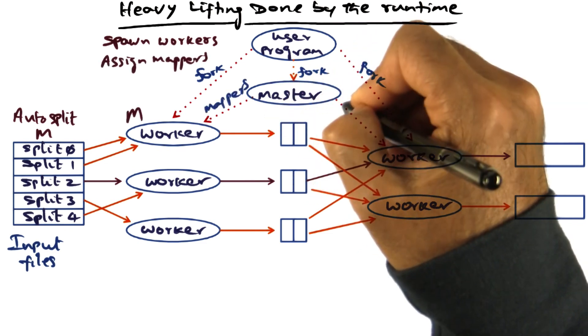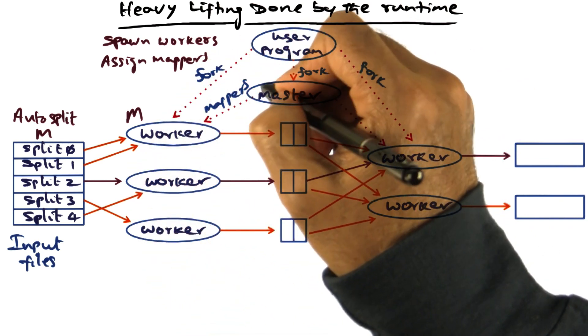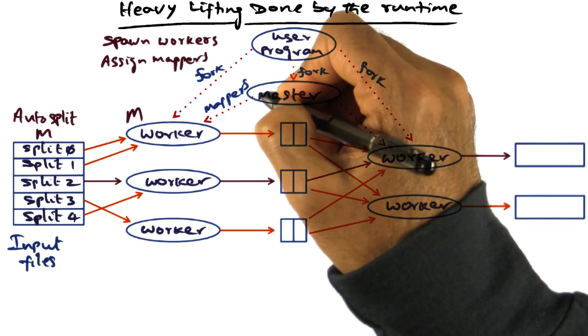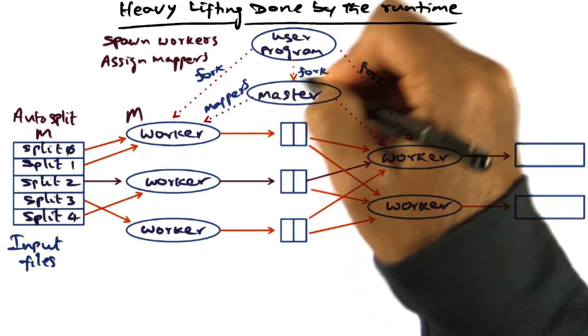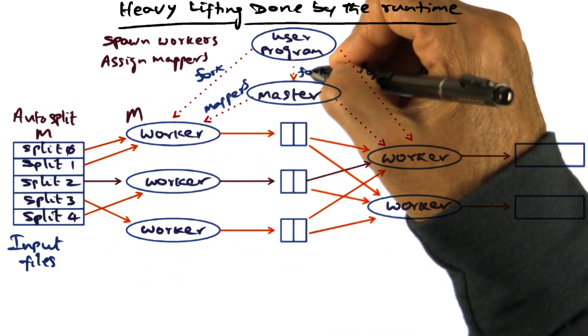The next thing that happens is that the master is going to assign some number of worker threads as the mapper worker threads. The number of mapper worker threads may correspond to the number of splits that it has done in the beginning.